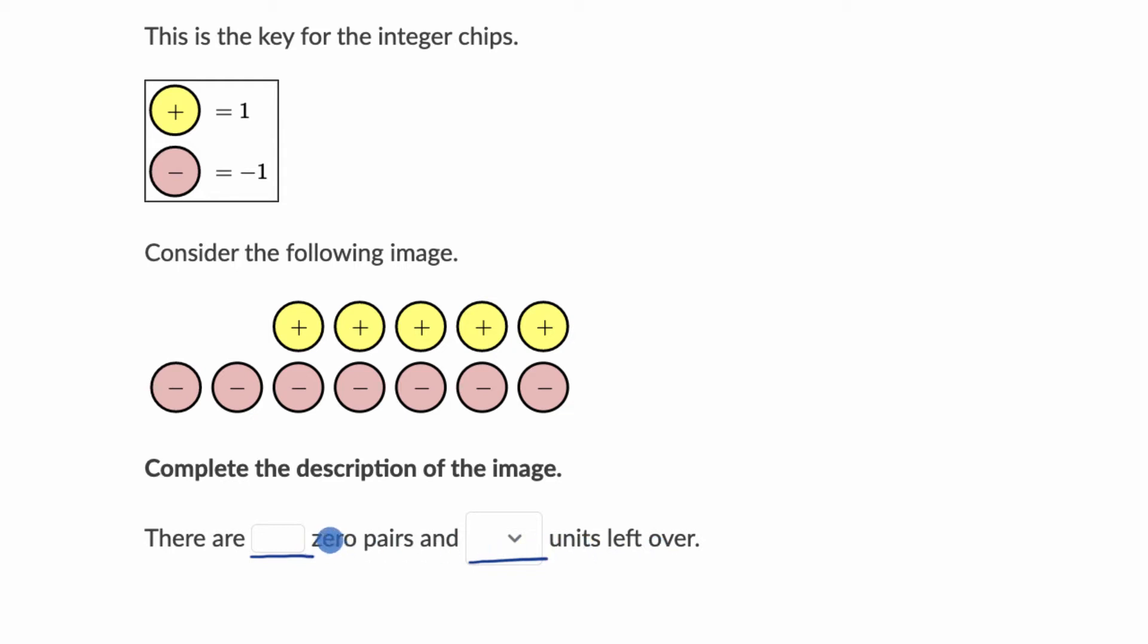If you're actually doing this exercise, this is a screenshot from the exercise, you would fill in something here and there's a dropdown over here. So the first question you might ask is, what is a zero pair?